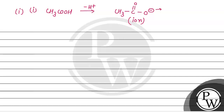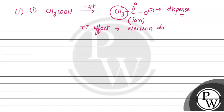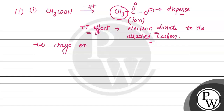Stable कब होगा? जब oxygen का negative charge dispersed होगा। लेकिन इस case में हमारे पास alkyl group लगा है, और alkyl group का plus I effect होता है। Plus I effect का मतलब है कि यह electron donate करेगा the attached carbon को। तो alkyl group का plus I effect होने से वो electron donate करता है carbon को, और oxygen के electronegative nature की वजह से oxygen को electrons donate हो रहे हैं। इसका मतलब जो negative charge है on oxygen, वो get intensified हो जाता है।